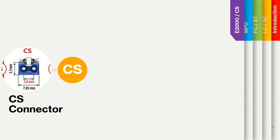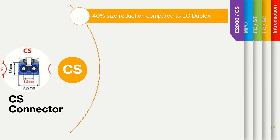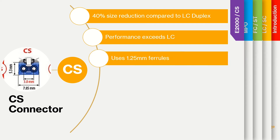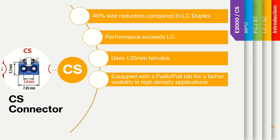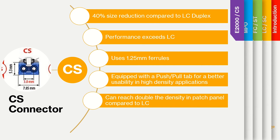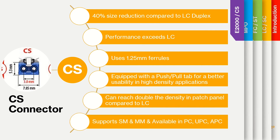The last connector for our session today is the SN connector. It is one of the latest developed connectors of the 21st century. It has a 40% size reduction compared to the LC duplex connector and is equipped with a push-pull tab for better usability in high-density applications. This allows it to achieve double the LC density in patch panels. It uses the same 1.25 mm ferrule as the LC connector and is available in single mode, multi-mode, and in PC, UPC, and APC polishes.